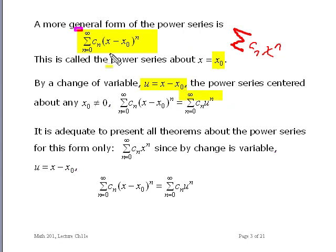Then we can write the power series as c to the n, u to the n. So now we have a power series in u centered about zero, just like we had before where we had a power series in x centered about zero. So we don't need to redo any of the theorems or anything that we develop here for the more general case of x minus x₀.